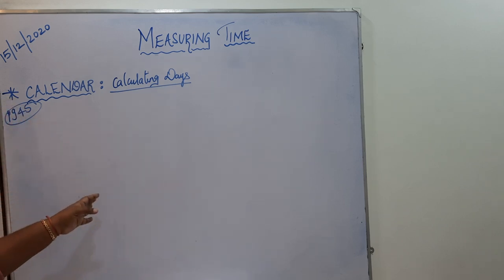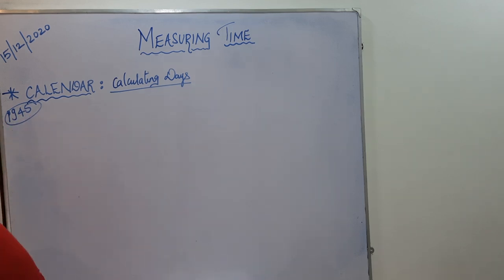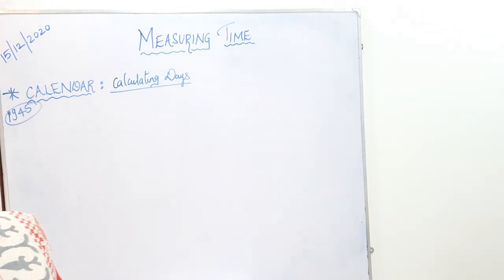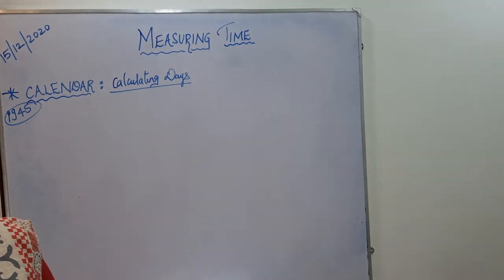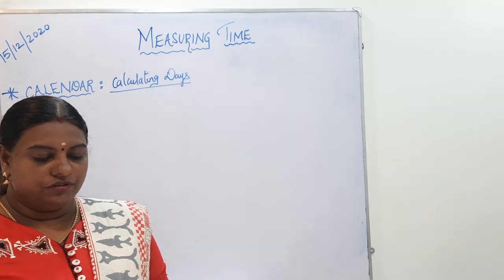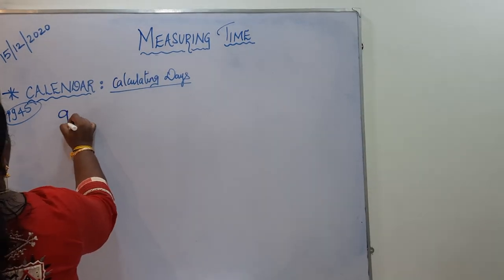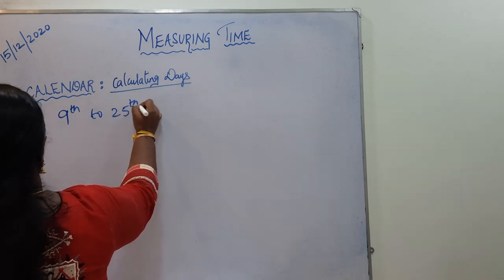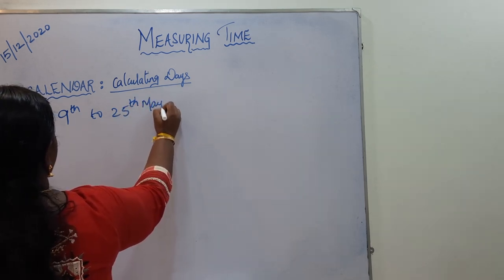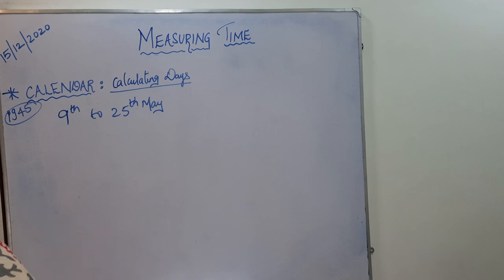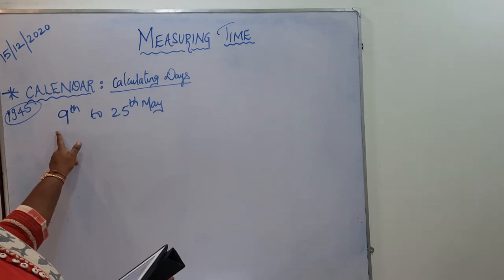You should be thorough with the number of days in each month, then only you will be able to calculate the number of days. Let us see page number 45 of your textbook — measuring a period of time. Sureka went to her uncle's village in the month of May. She went swimming every day from 9th to 25th of May during her vacation.